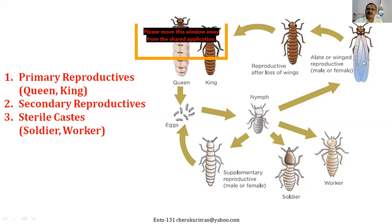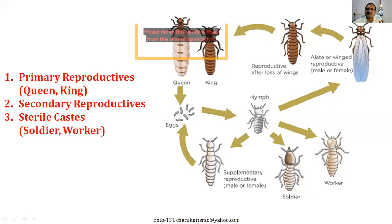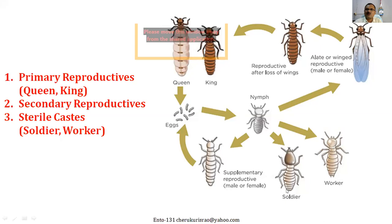Winged adults become king and queen. Wingless adults can be workers — busy collecting food and keeping the termitoria clean — or soldiers, who protect the termitoria from enemies. Soldiers have weapons: either highly developed mandibles or a fontanelle. Adults are classified into three categories — primary reproductives, secondary reproductives, and sterile castes.